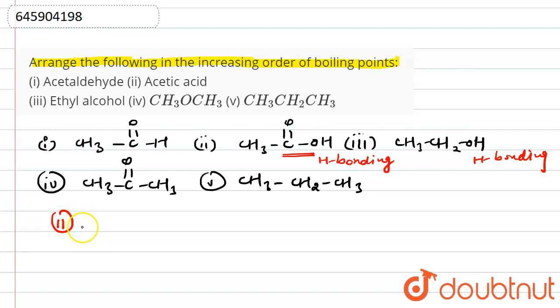Second will have the highest boiling point, and then we will have alcohol, that is three, because acetic acid can form stronger hydrogen bonding than ethyl alcohol.